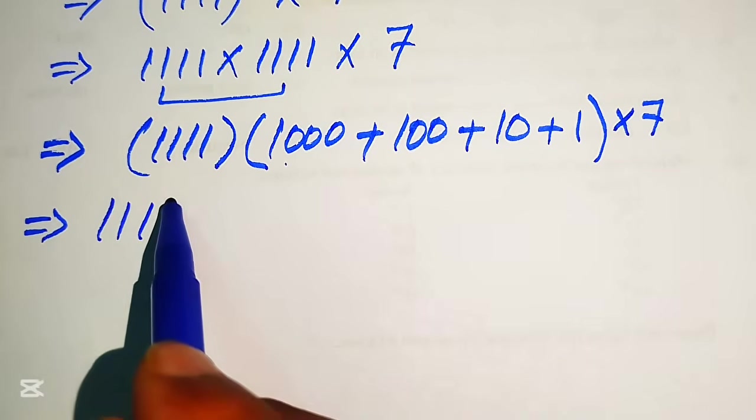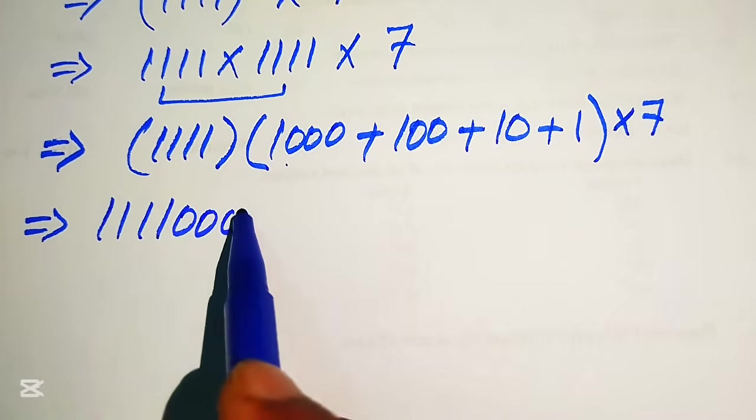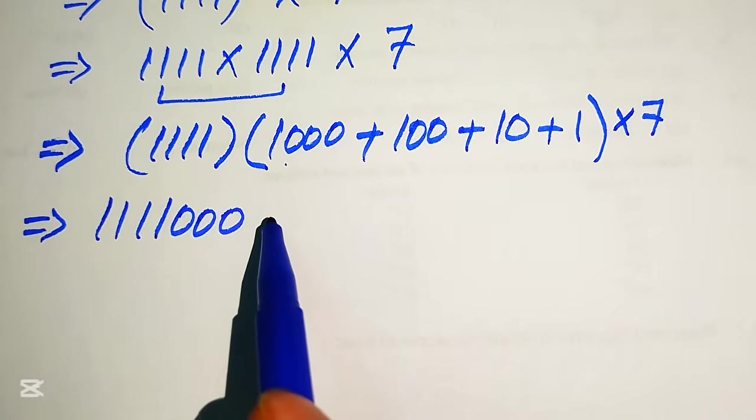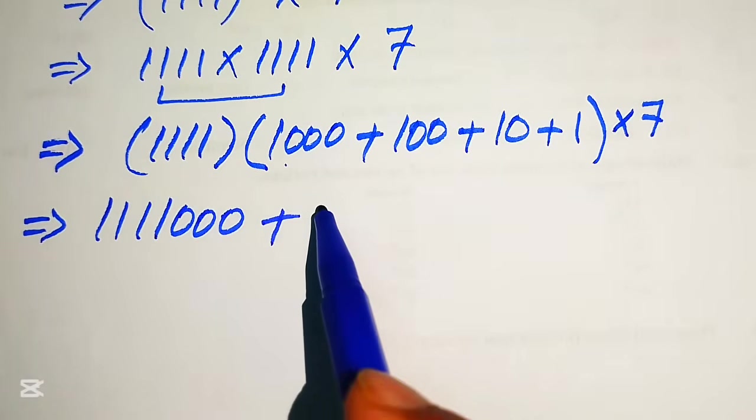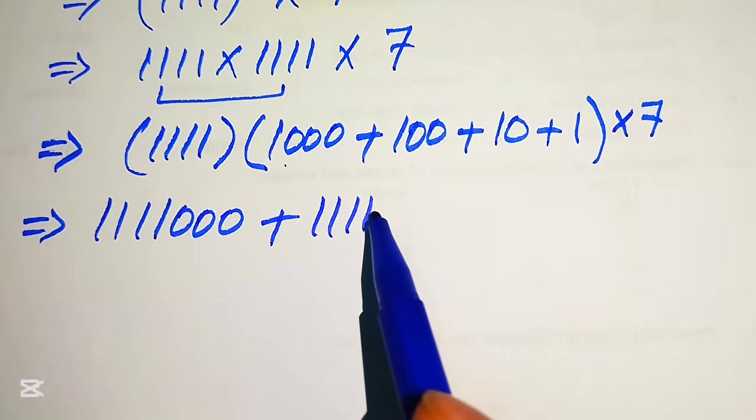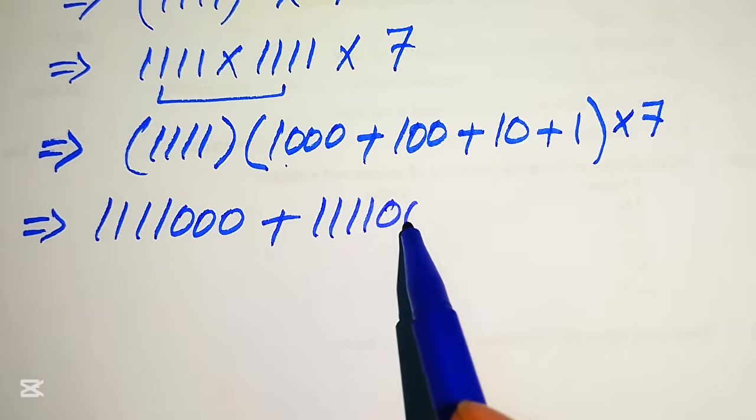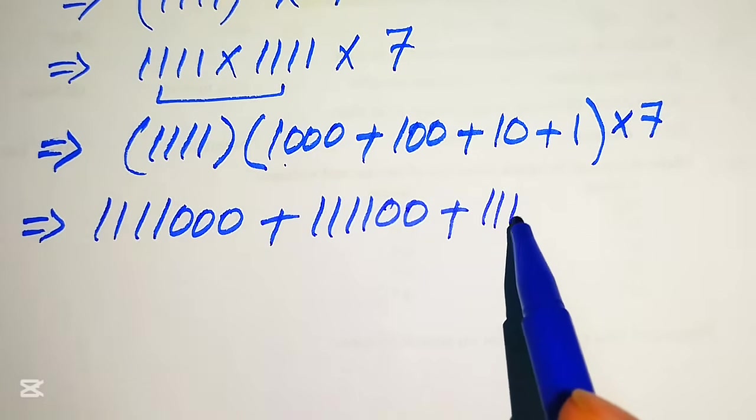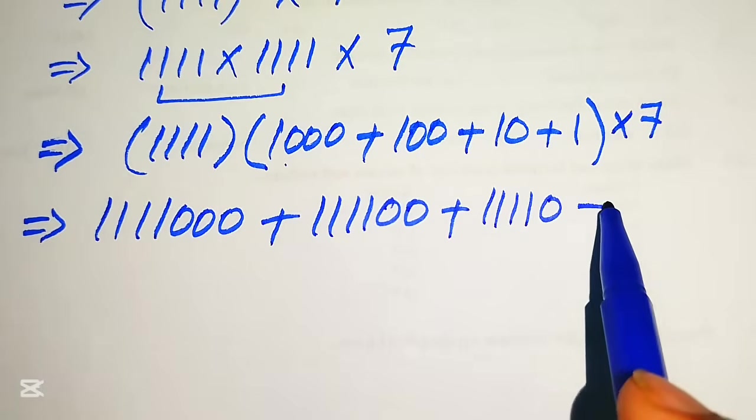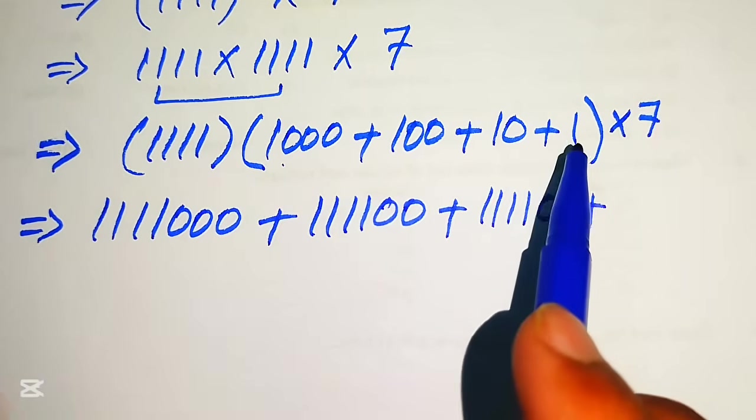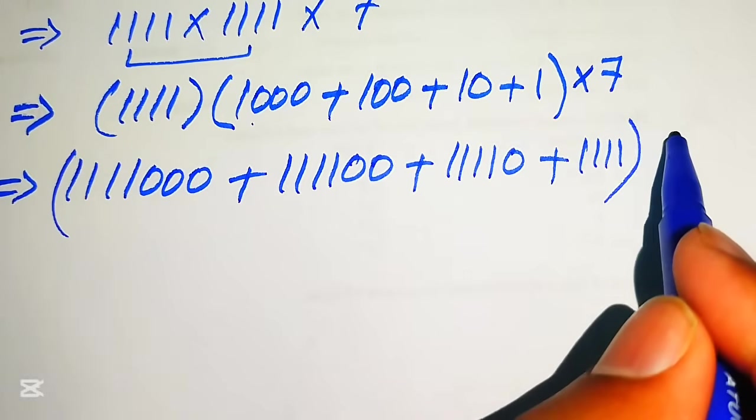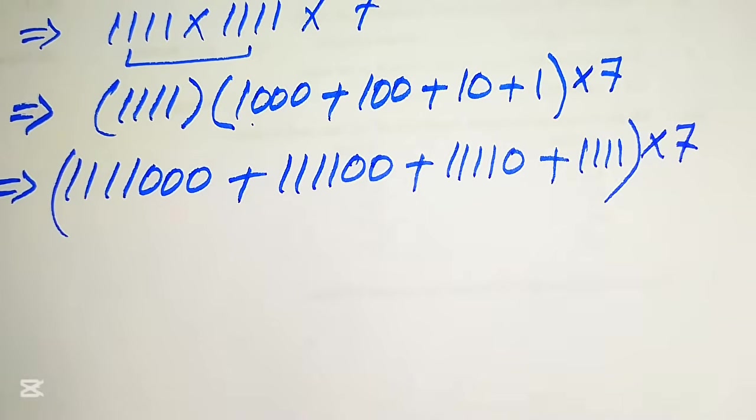We just add these three zeros on this value when we can multiply here. You can write it as 1111 and we can just write these three zeros. We get this value when you multiply this term on this plus when you multiply this term on this we will get here 4 1s and 0 plus when you multiply this by this 1 when we here we get 4 1s and this whole number is multiplied by 7.